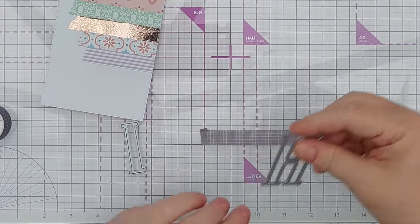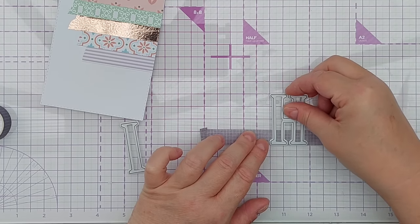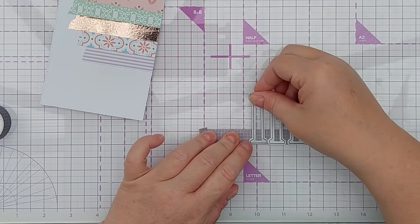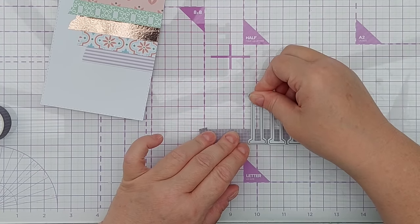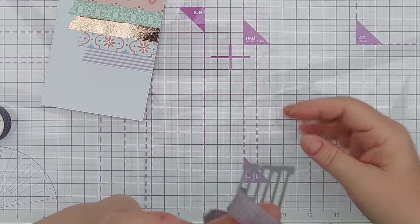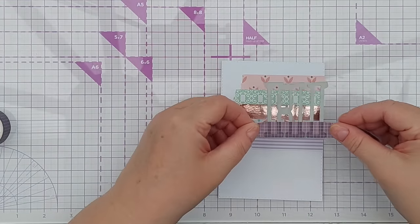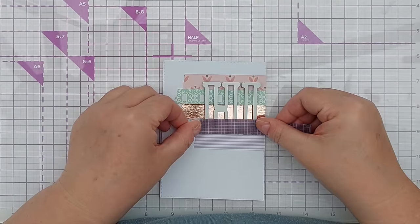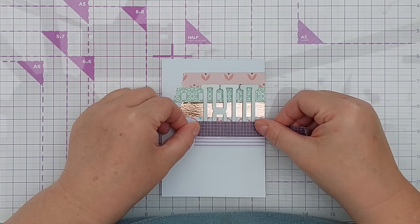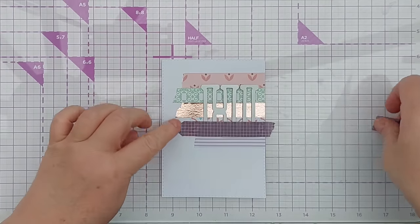For my sentiment I'm going to die cut the word hi so I've got two large word dies here and I'm going to line them up along the bottom of this piece of washi tape. So they should be level and when I flip it over they will be in the right orientation and now I'm going to add this over my strips and run that through my die cutting machine.